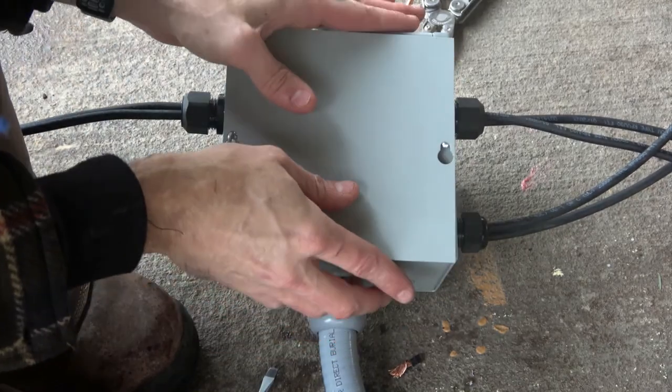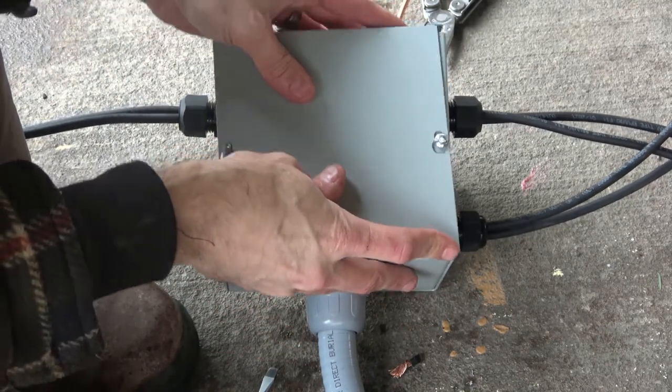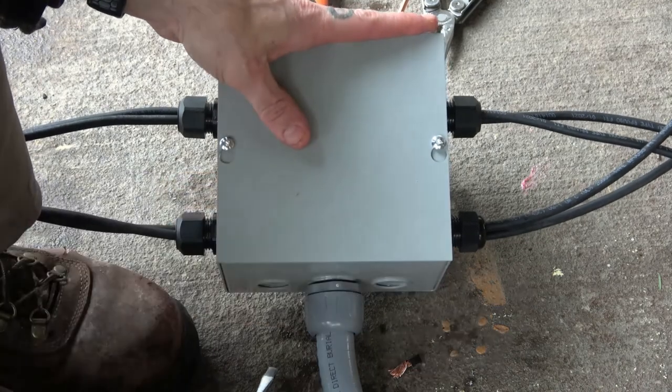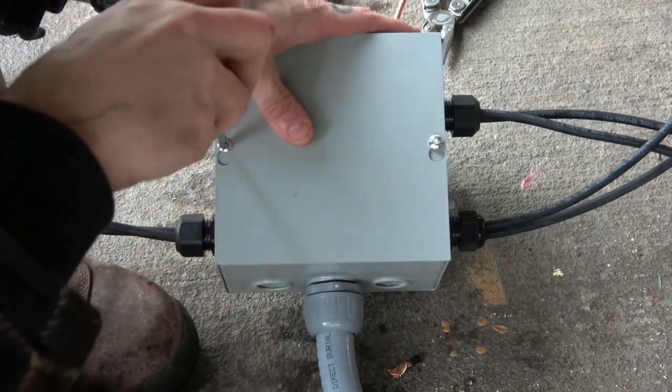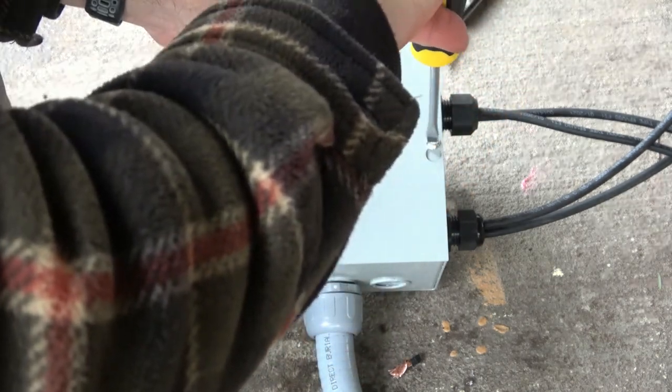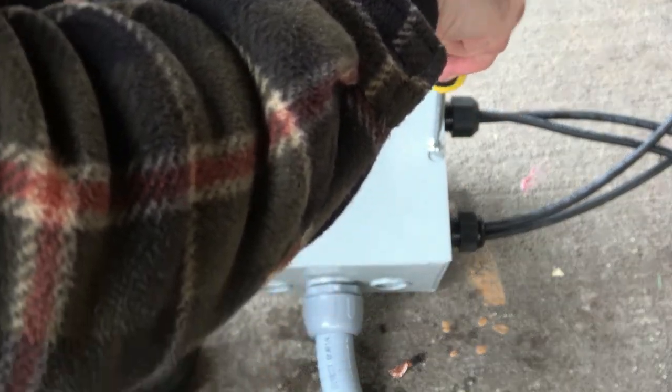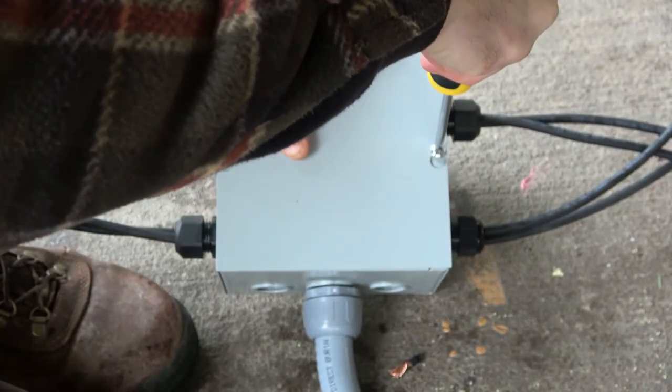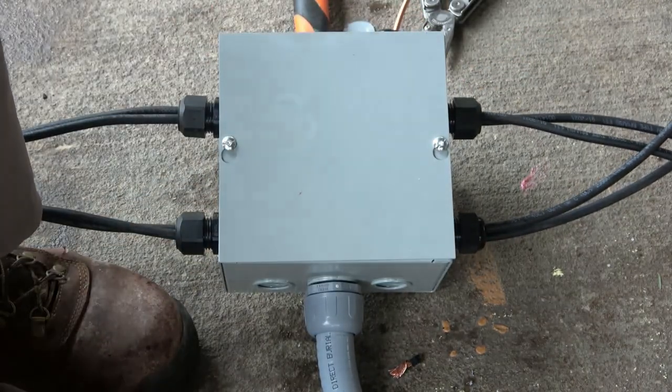After all the wires and connections have been completed, we'll replace the lid of the junction box and tighten the screws. Now obviously there are different types of junction boxes that can be used as either a pass-through or a combiner box, including some of the more robust residential and commercial products, but this is one relatively simple option that might work for a small application.